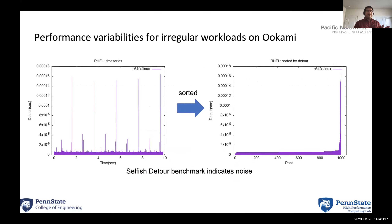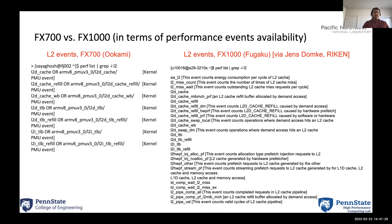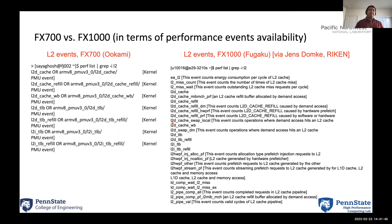We noticed some performance variabilities for irregular workloads on Okami — this is the Selfish Detour benchmark, and you can see the spikes. We also required a lot of L2 performance events, and we noticed notable differences between Okami and Fugaku. Although the kernels are slightly different, it might be because of the kernel or the architecture — we're not sure exactly, and we need to figure that out.